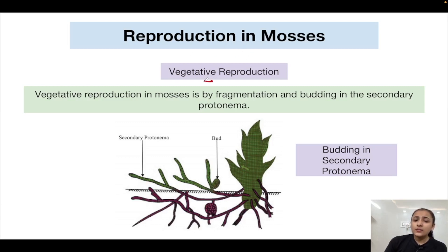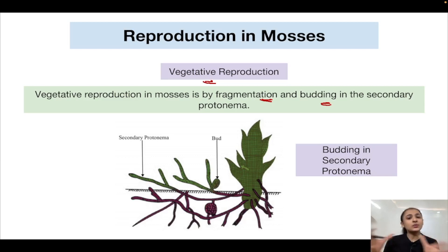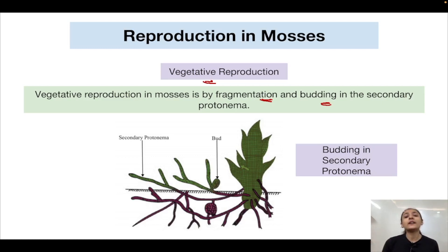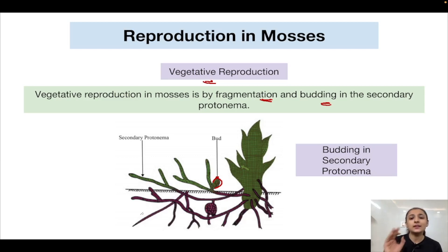Reproduction in mosses via vegetative reproduction is either by fragmentation or by budding in the secondary protonema. Fragmentation: a portion of the thallus breaks off and gives rise to a new thallus. Budding in secondary protonema: in the miniature moss stage where leaf-like structures are just beginning to appear, buds are formed that give rise to a complete new thallus.